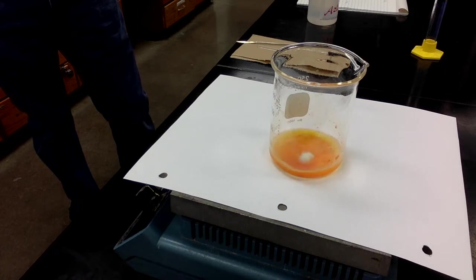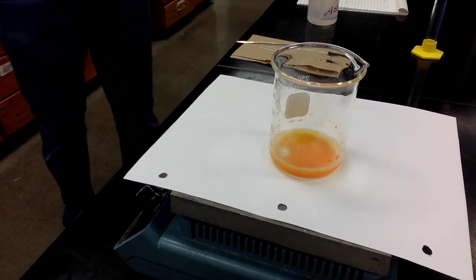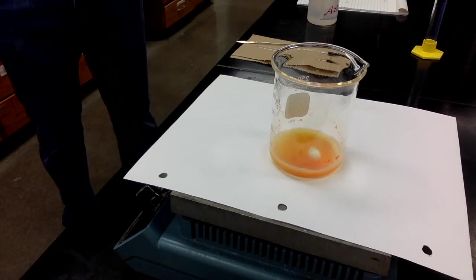Remember, sodium borohydride is NaBH4, and that means that there are four equivalents of H- for every one sodium borohydride molecule, so that's something to consider when you're thinking about how the quantities relate to one another.